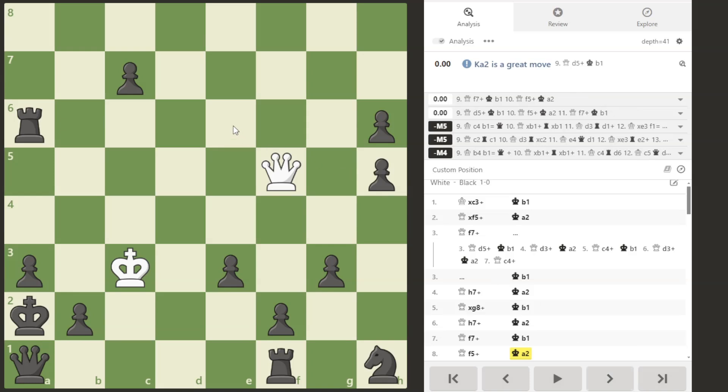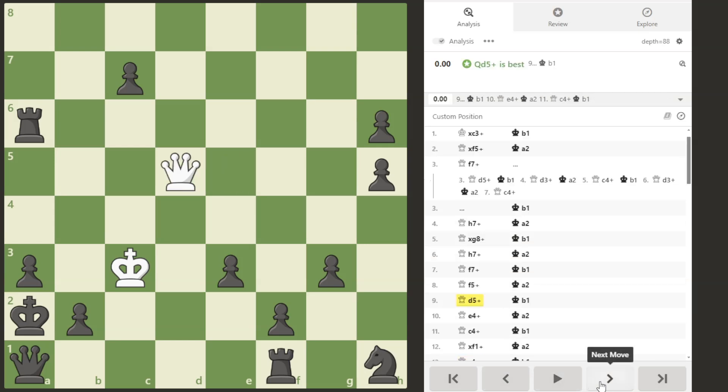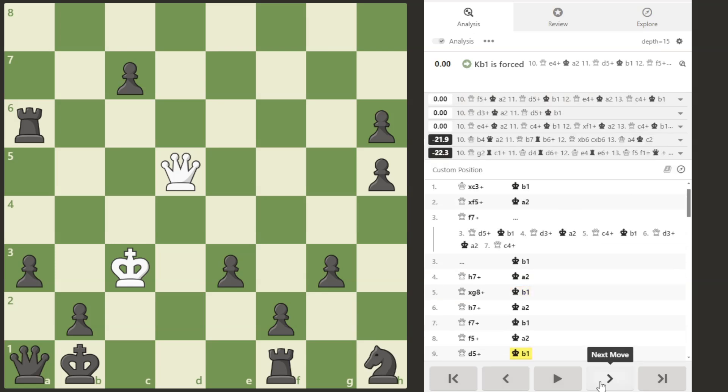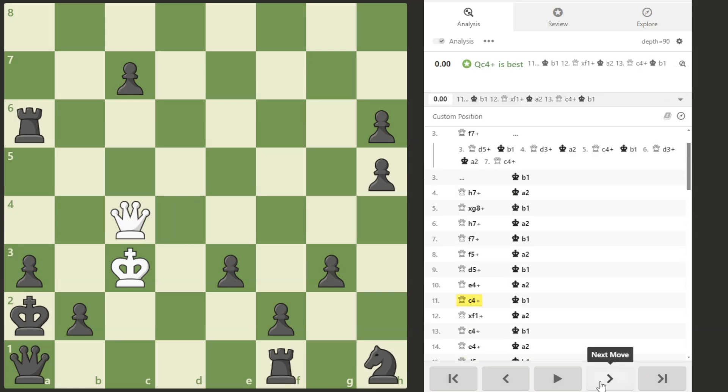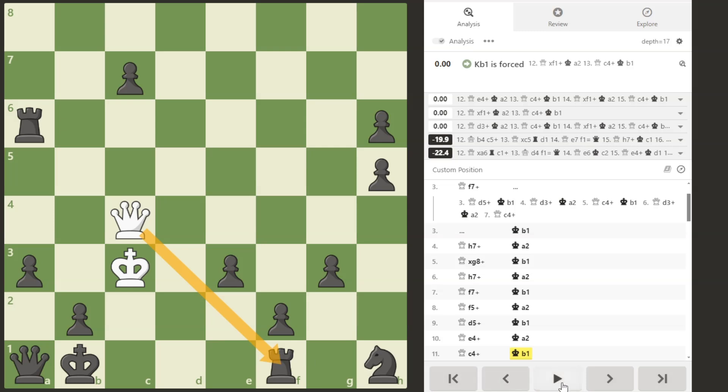Now from this point, we are going to live primarily on these four light squares. Because remember, all the black pawns are on dark squares. So the queen is going to make a living on e4, c4, d5, and e6. So from here, we are going to play queen to d5 check. King back to b1. Queen on e4. King back to a2. Queen to c4. King back to b1. And now we can take the rook with check.